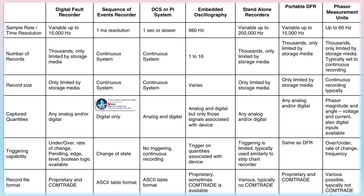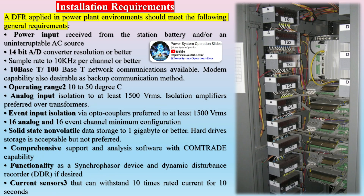Some of the technologies that use digital recording technology within the power plant environment include the following. Distributed control systems (DCS) and process integration (PI) systems generally gather and archive large volumes of data available in the power plant. Because of the broad-brush nature of the data collection, the sample rates are on the order of seconds, so high-speed events are not captured. These systems are useful in the identification of long-term trends.